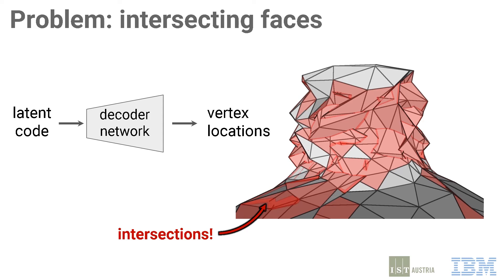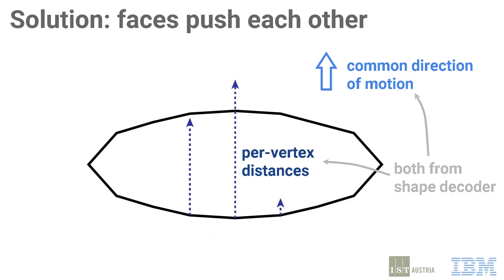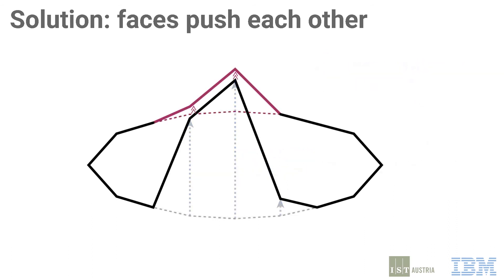We therefore propose a novel method to ensure that the meshes produced by our decoder cannot contain any intersecting faces. We do this by parameterising meshes as a sequence of deformations applied to some non-intersecting base shape. During each deformation step, faces push one another out of the way instead of colliding. In the example on the slide, the decoder outputs a global direction of motion and a distance for each vertex, shown by the blue arrows. When applying this movement, the red faces get pushed out of the way.